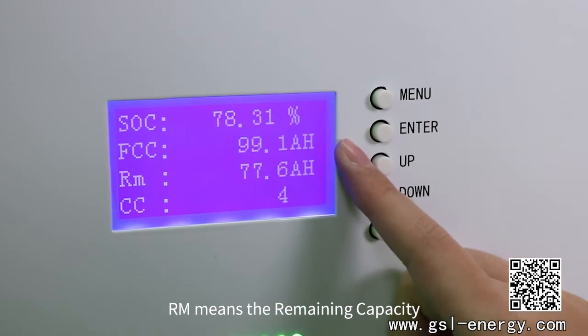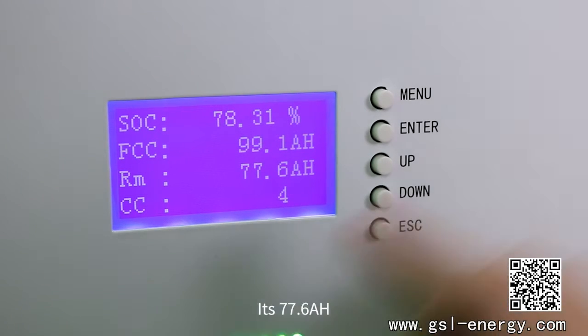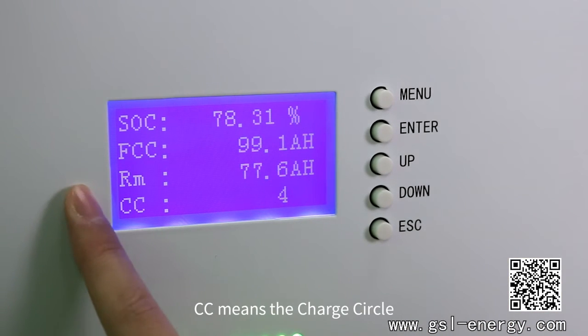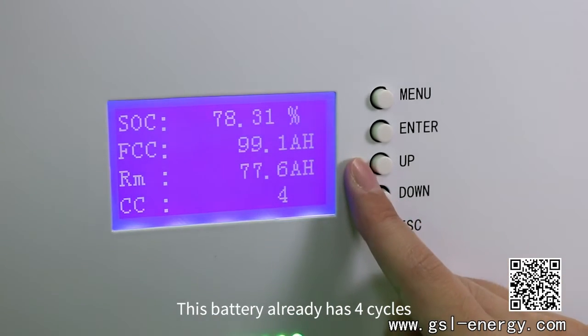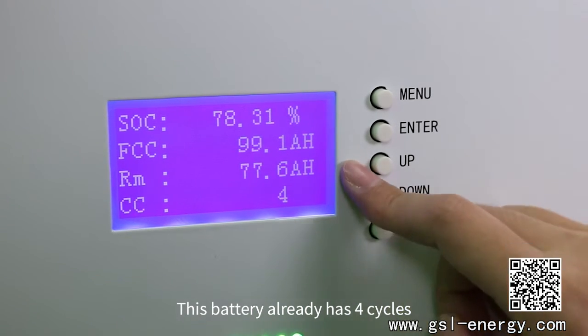RM means the remaining capacity is 77.6 amp hour. CC means the charge cycle. This battery already has 4 cycles.